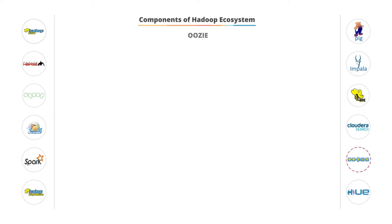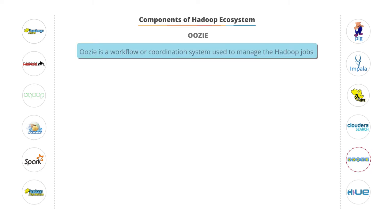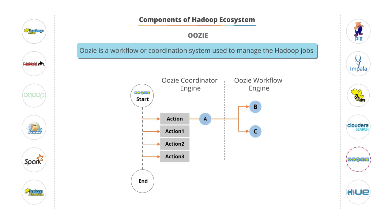Oozie. Hadoop jobs such as MapReduce, Pig, Hive, and Scoop all have workflows. Oozie is a workflow or coordination system that you can use to manage Hadoop jobs. The Oozie application lifecycle is as shown in the diagram. As you can see, multiple actions occur between the start and end of the workflow.